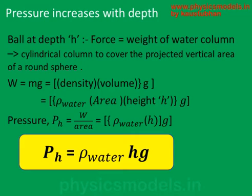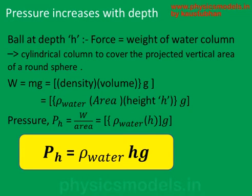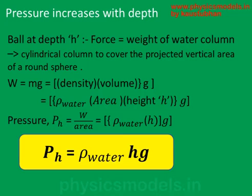Let's start with the ball at a depth H. The weight of the water column is mg, just like any other force. The mass is density times volume. We take the density of water, and the volume is the area of cross-section times the height — so pi r squared times h for a cylindrical column. Now the pressure acting on the ball is force divided by area, so the area cancels out, and you are simply left with density of water times height times acceleration due to gravity. That's how you get the equation: pressure equals rho times h times g.